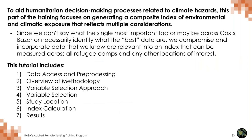We will focus on generating a composite index of environmental and climatic exposure that reflects some of the considerations going into humanitarian decision-making. We can't say what the single most important factor may be or what the best data are — we are always compromising and making decisions. Understanding that agency is also part of understanding your responsibility in this space. I'll hand this over to Michael Owen, who will talk through the seven steps you see here on the screen.